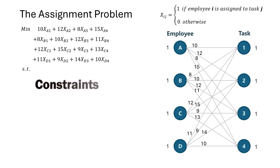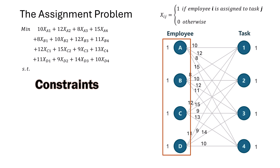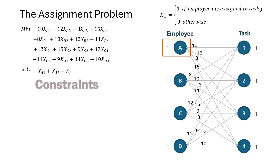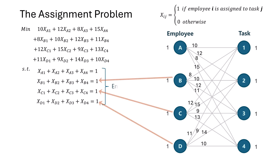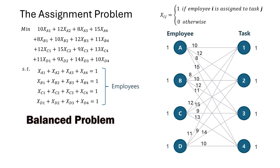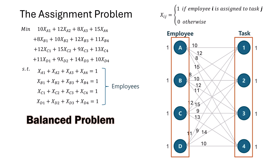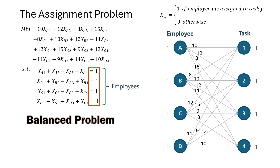Now let's look at the constraints. For each employee, we need a constraint to ensure they are assigned to exactly one task. For employee A, the constraint is x_a1 + x_a2 + x_a3 + x_a4 = 1. This means employee A must be assigned to task 1, 2, 3, or 4, and to only one of them. We write similar constraints for employees B, C, and D. This is a balanced assignment problem because we have the same number of employees and tasks, so we use equality constraints.